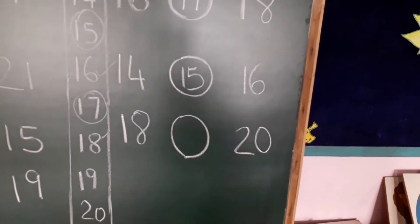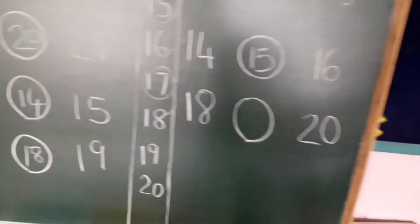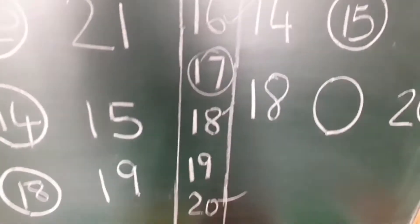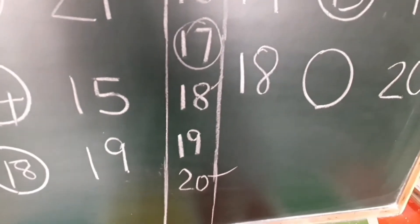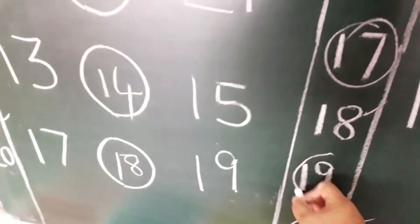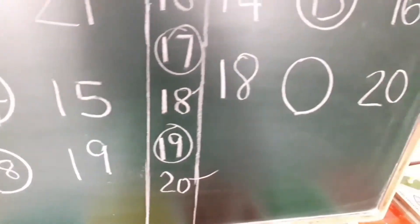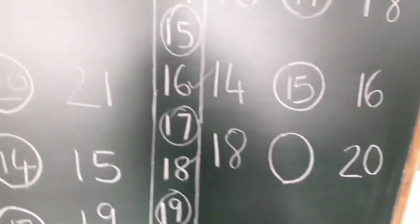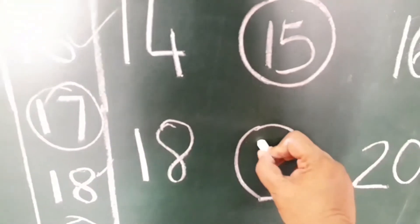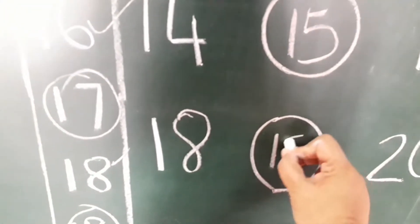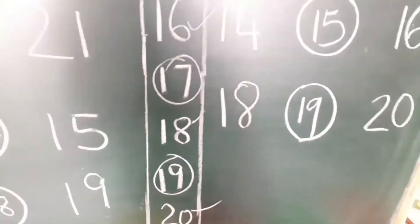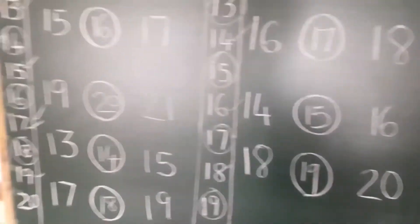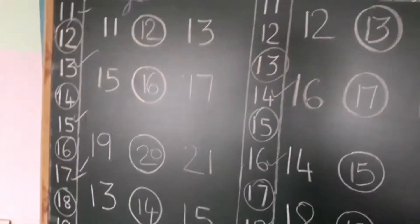18 dash 20. So which number is between 18 and 20? The between number is 19. Yes. How to write 19? 1, 9 — 19. So do you understand between numbers?